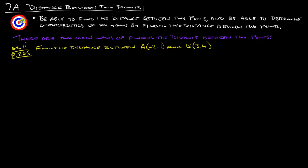So, first thing, there are two main ways of finding the distance between two points. We're going to take a look at example 1 from page 205 to look at those two different ways. We're going to find the distance between negative 2, 1 and 3, 4 — the distance between point A and point B.